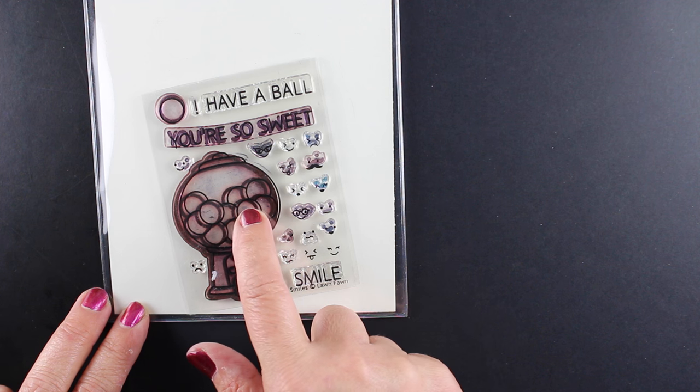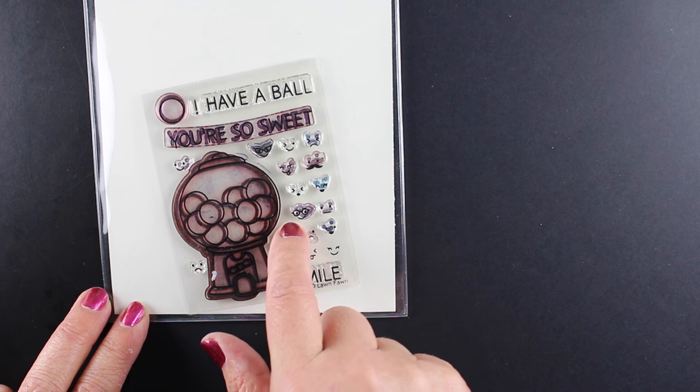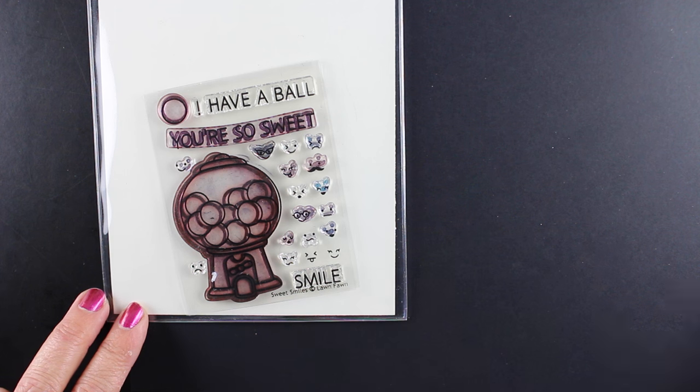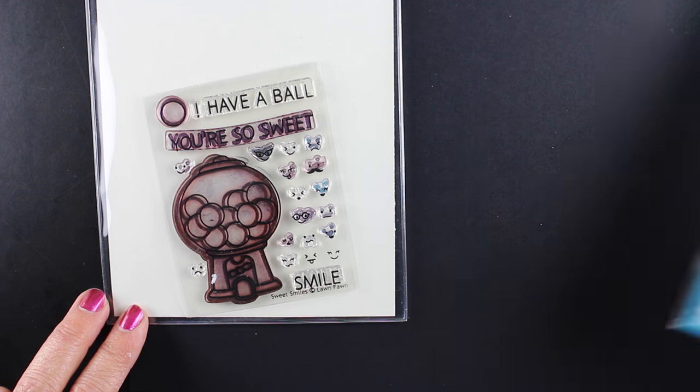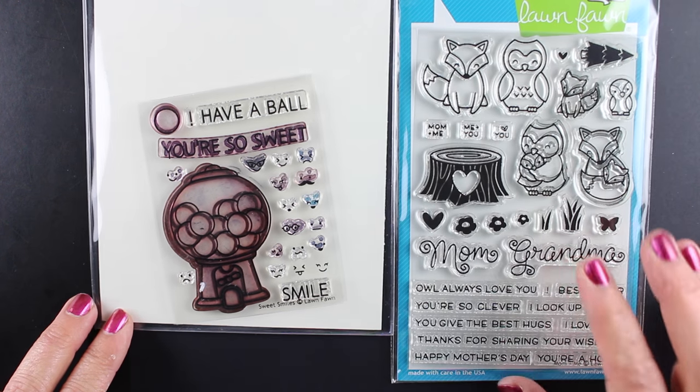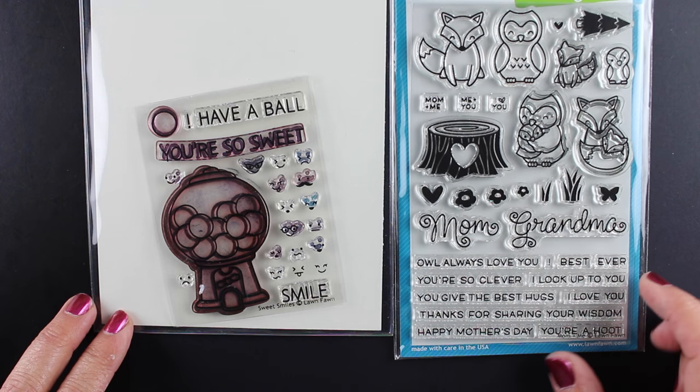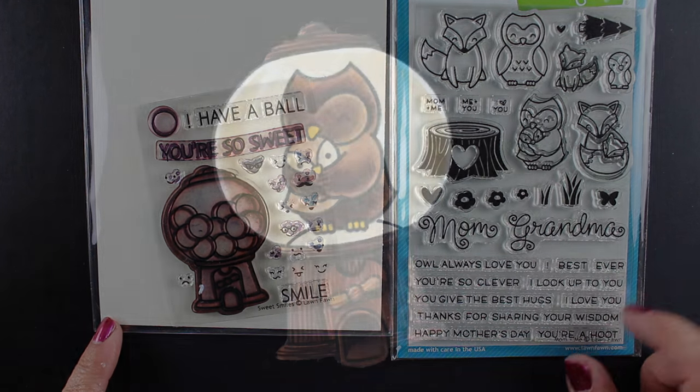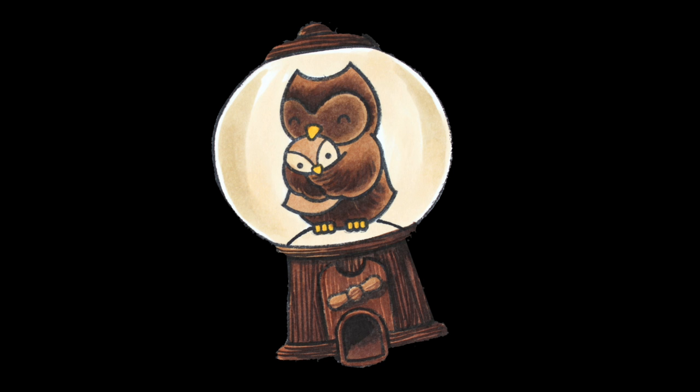And this is a gumball in which I stamped the whole gumball onto some post-it tape. I trimmed out the gumballs and then stamped it so that I only was stamping the outside. And then I had room on the inside to put one of these images from the Mom and Me set, the little owls. And I colored the rest so it looked like it was made of wood, so it kind of fits the whole feel of the little woodsy stamps.